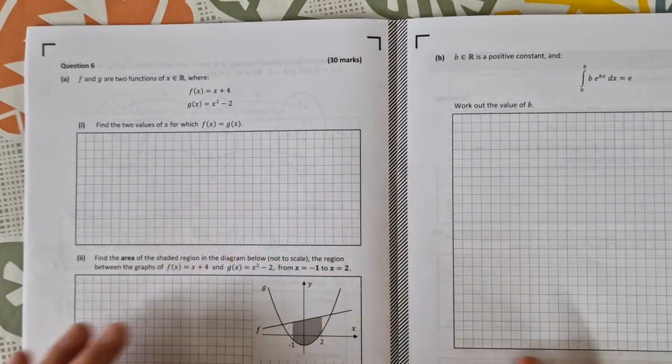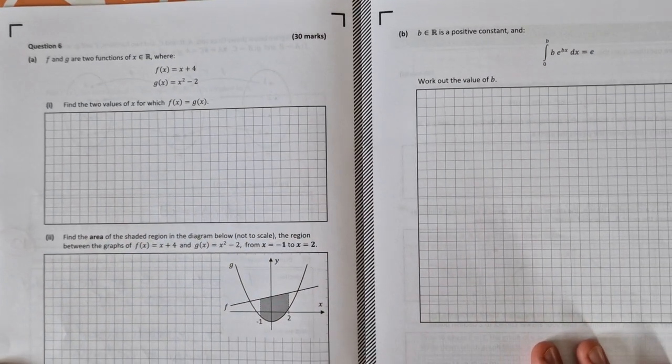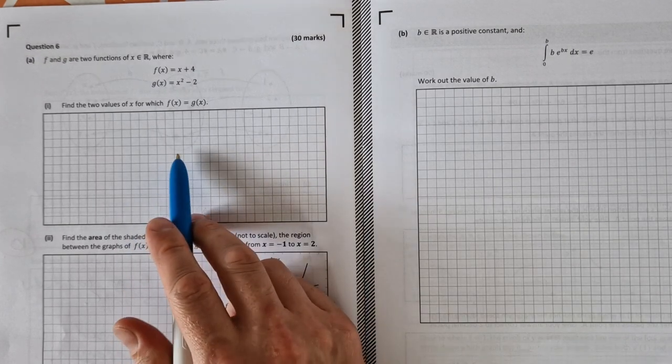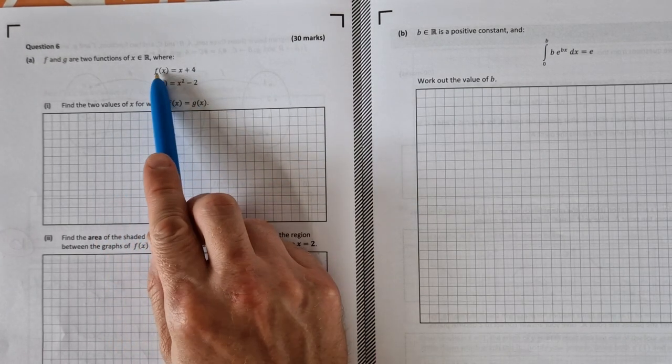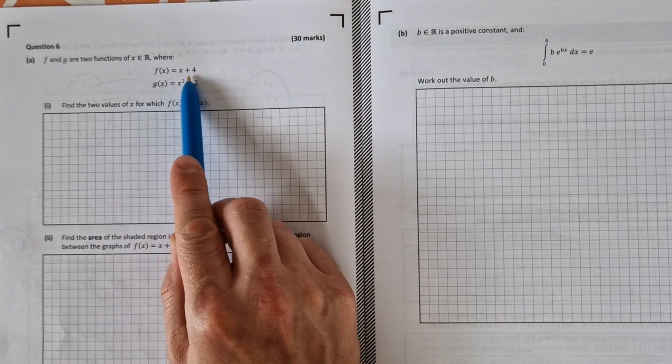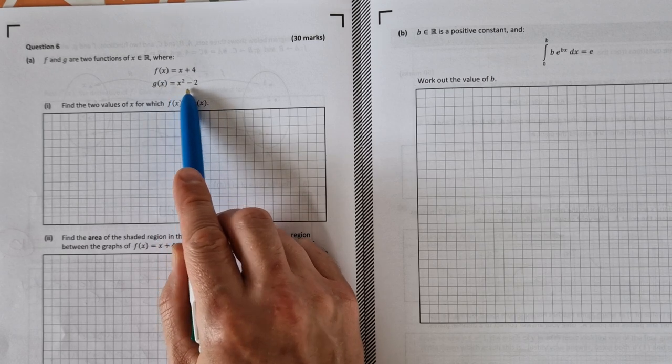Question Six is another functions and calculus question. Part A is quite easy. We're given two functions: f(x) = x + 4 and g(x) = x² - 2.